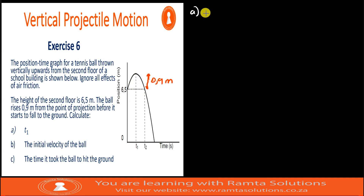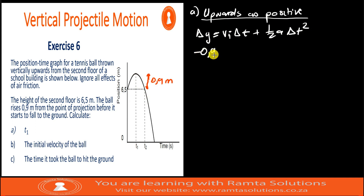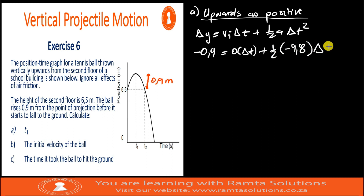I will choose upwards as positive and use the kinematic equation: Δy = vi·Δt + ½·a·Δt². The object is falling downwards from maximum height, so Δy = −0.9 m. Initial velocity at maximum height is 0, so that term drops out. Acceleration is −9.8 m/s².